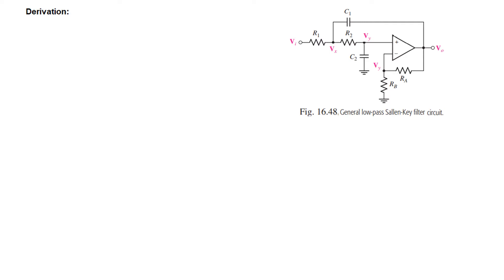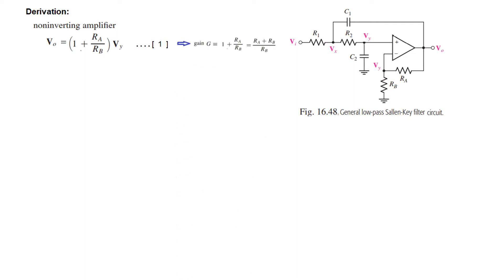Now we will try to find the relation between V_out and V_in — that is the transfer function, which is the ratio of V_out divided by V_in. We start from the non-inverting amplifier. We know that the equation for a non-inverting amplifier is given by V0 = (1 + RA/RB) × VY. The gain G is equal to 1 + RA/RB.